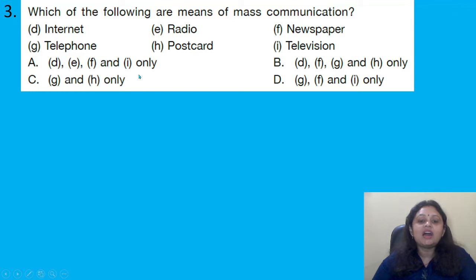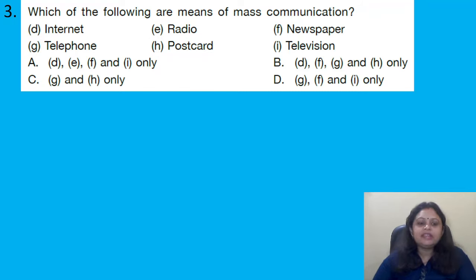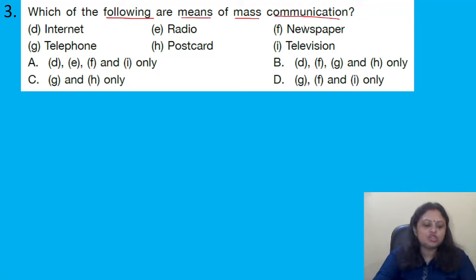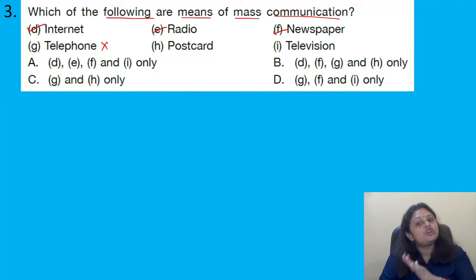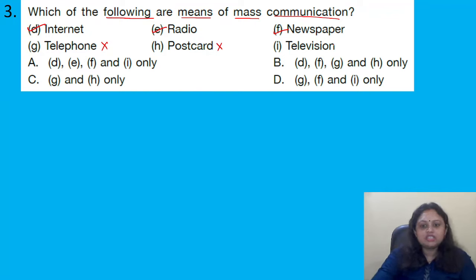Which of the following are means of mass communication? Options given are: D – internet, E – radio, F – newspaper, G – telephone, H – postcard, I – television. For mass communication: internet – yes, radio – yes, newspaper – yes, telephone – it is for one-to-one communication, not mass communication. Postcard – also one-to-one communication. Television – yes, mass communication. So the correct answer is option A: D, E, F and I only.